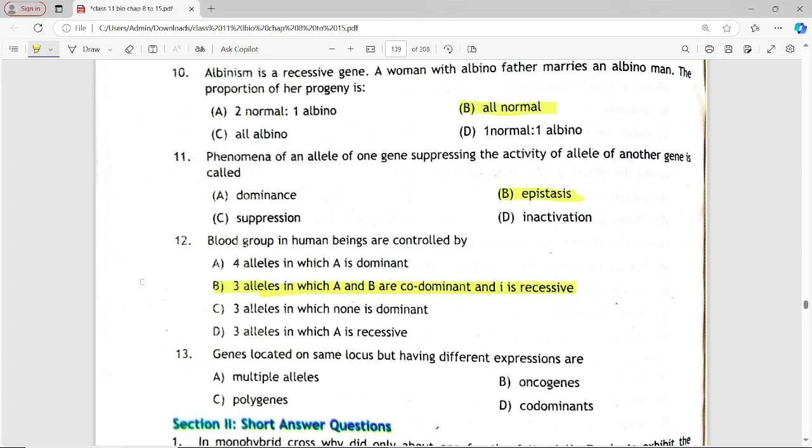Next is: Genes located on same locus but having different expressions are? Multiple alleles, oncogenes, polygenes, co-dominants. Answer is option D, co-dominants.